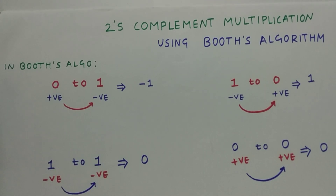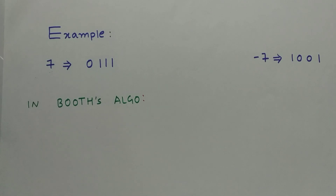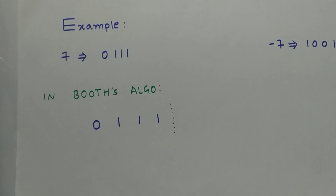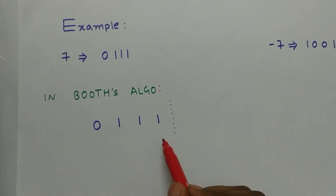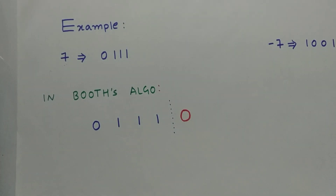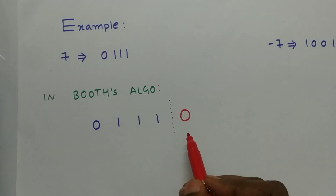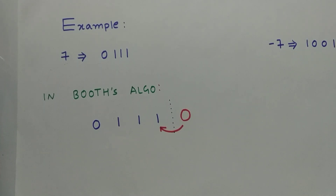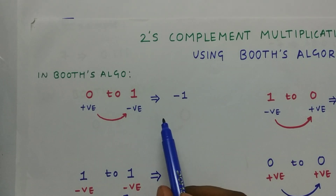For better understanding, let's take an example and see how a binary number is represented in Booth's algorithm form. Let's take the example of 7. This is the binary representation of 7, and I will add an extra 0 before proceeding — this 0 has no value, no weight attached to it. Now we are moving from LSB to MSB. We start at 0 and move to 1, so 0 to 1 gives us -1.